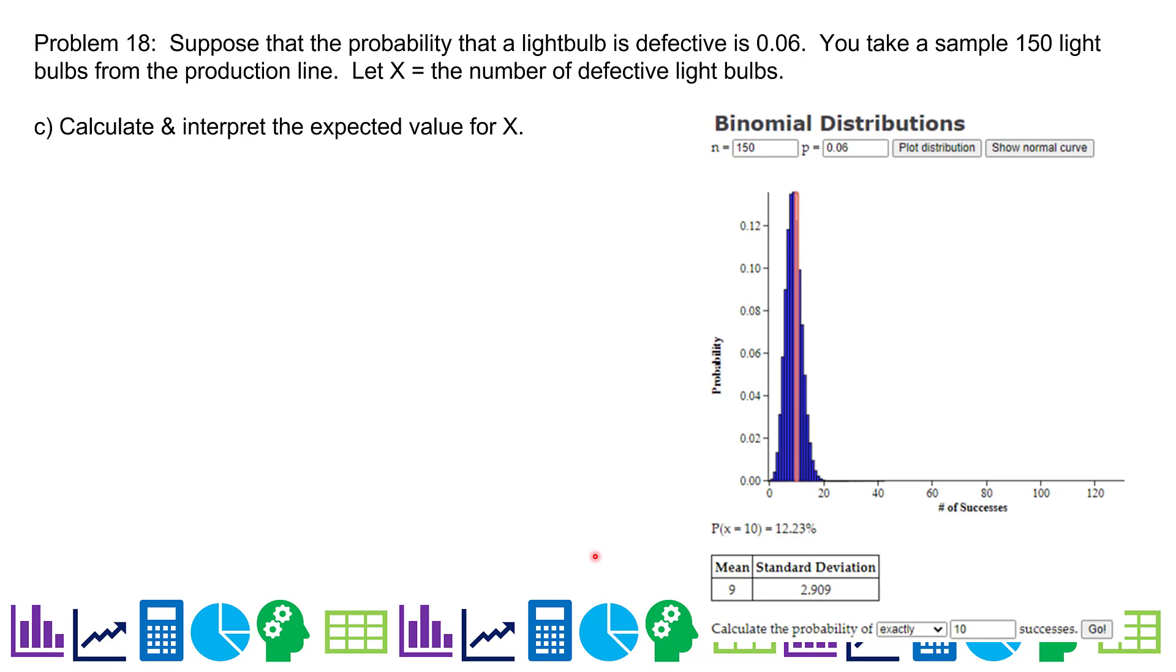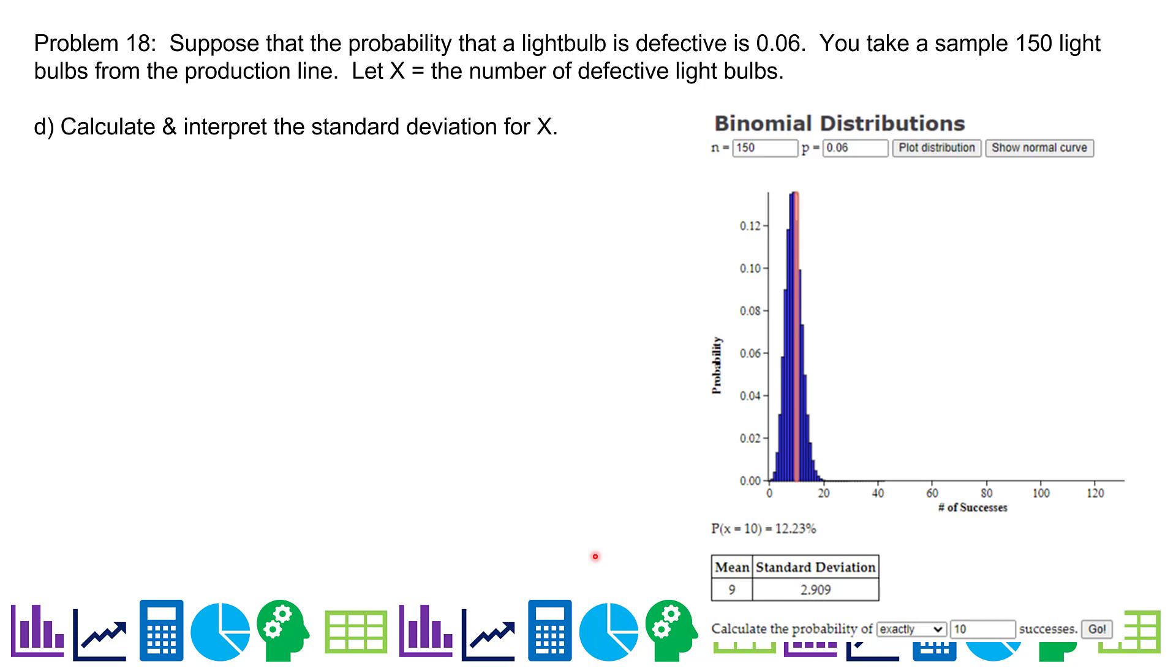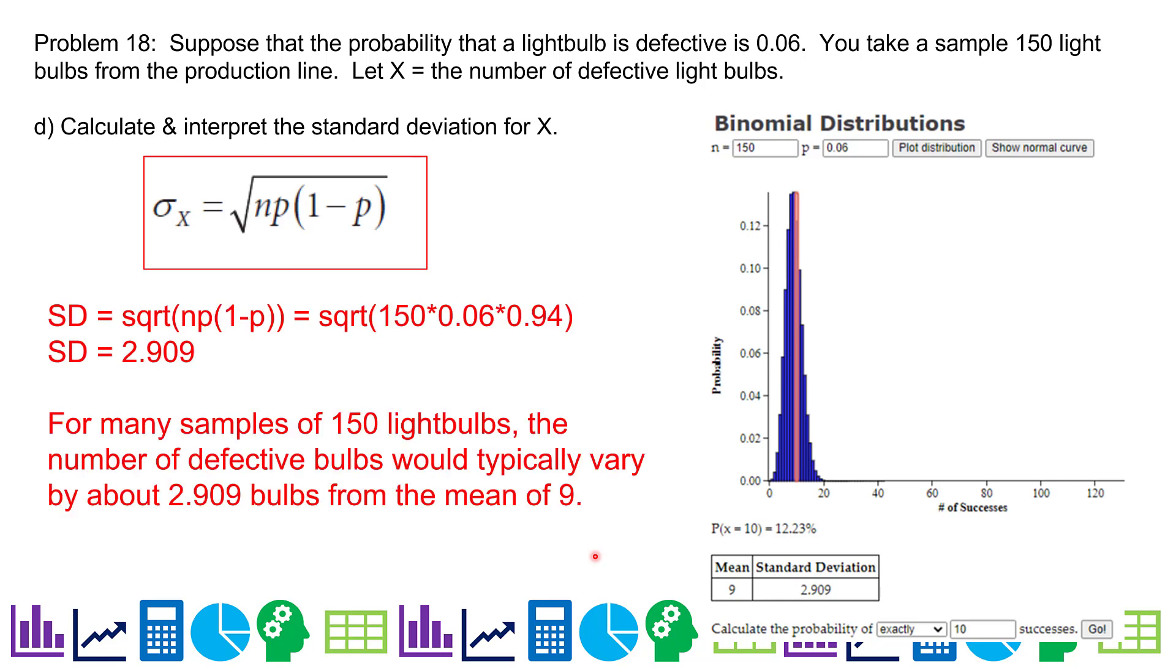Calculate and interpret the expected value for X. Well, I'm going to use this formula from your math chart. The mean for a binomial distribution is N times P, 150 times 0.06, which is 9. So for many samples of 150 light bulbs, we would expect to find on average 9 defective bulbs. Remember how to interpret. If I ask you to interpret and you don't write something, then you did not answer that part of the question. Now calculate and interpret the standard deviation for X. So the formula is the square root of NP times 1 minus P. So if I do all that, I get 2.909. Remember, standard deviation is a typical difference or distance between the mean and your data points. So for many samples of 150 light bulbs, the number of defective bulbs would typically vary about 2.909 bulbs from the mean of 9.